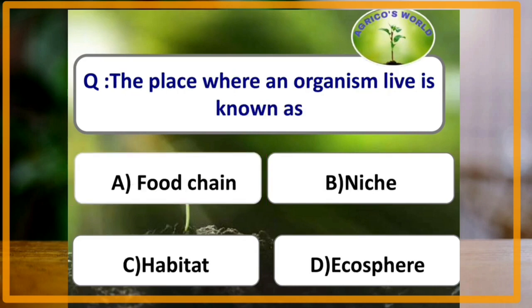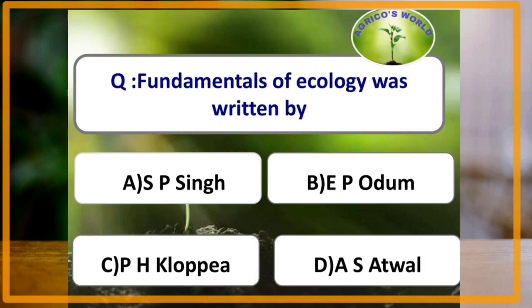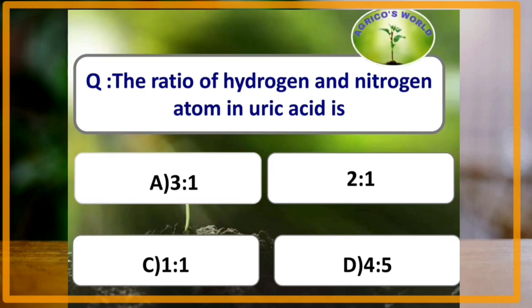The place where an organism lives is known as habitat. Fundamentals of Ecology was written by the scientist E. P. Odum. The book Introductory Insect Physiology is written by the scientist R. L. Patton. The ratio of hydrogen to nitrogen atom in uric acid is 1 to 1.